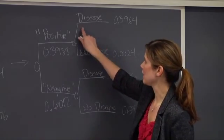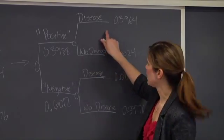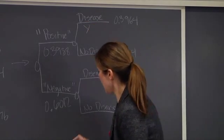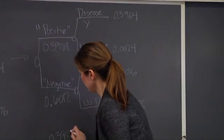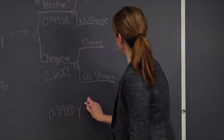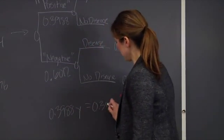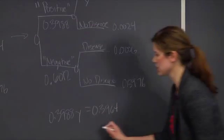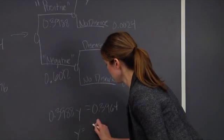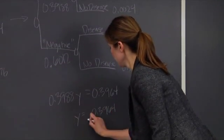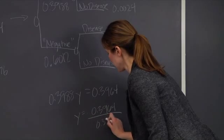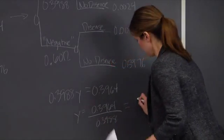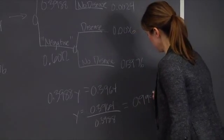The next step is to calculate these conditional probabilities. So again, let's call this probability Y. I know that 0.3988 times Y has to equal 0.3964. Then I can just solve for Y. Again, this is 0.3964 divided by 0.3988, which comes out to be 0.9940.